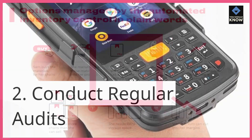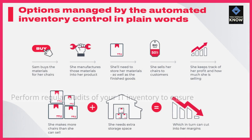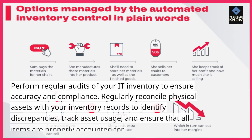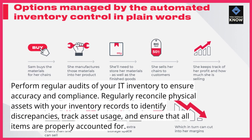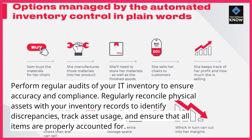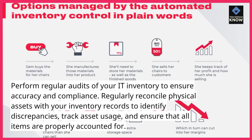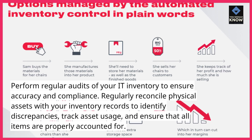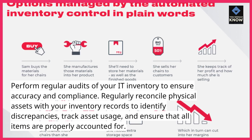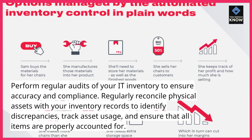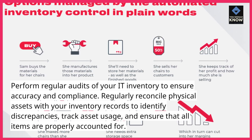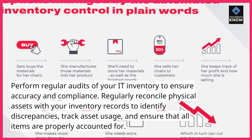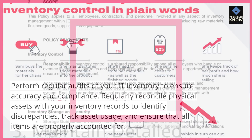Tip 2: Conduct regular audits. Perform regular audits of your IT inventory to ensure accuracy and compliance. Regularly reconcile physical assets with your inventory records to identify discrepancies, track asset usage, and ensure that all items are properly accounted for.